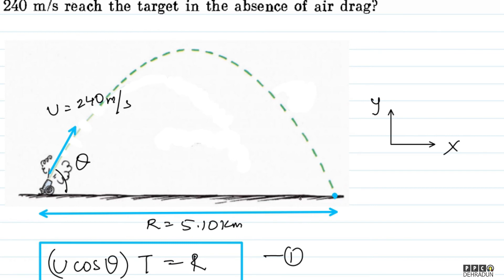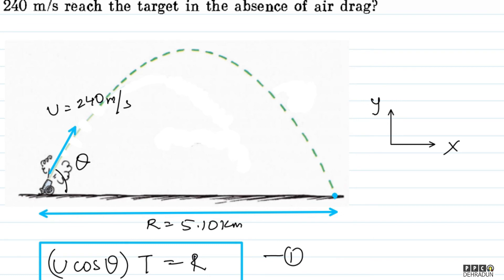So here theta has 2 values which gives time of flight 2 values. So here we have u equals 240 meters per second and r equals 5.10 kilometer and g value. From this our answer, one answer is t equals 0.41 minutes and the second is t equals 0.71 minutes. Both are acceptable.